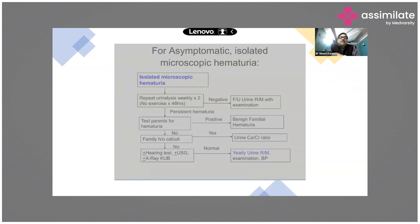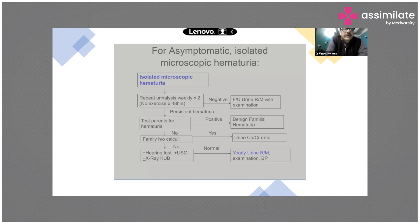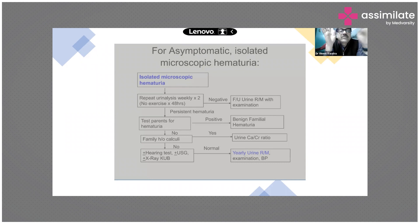Now, for an asymptomatic isolated microscopic hematuria — a patient who comes with microscopic hematuria and no symptoms at all — the first step is to repeat urine analysis weekly for two weeks, with no exercise for 48 hours prior.